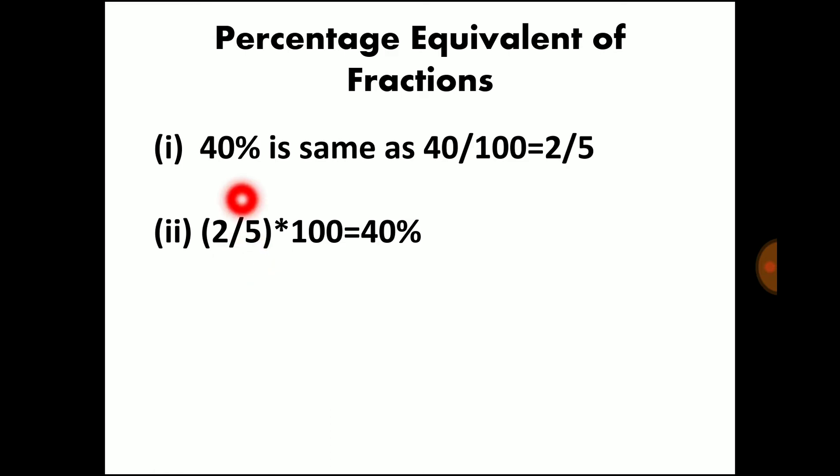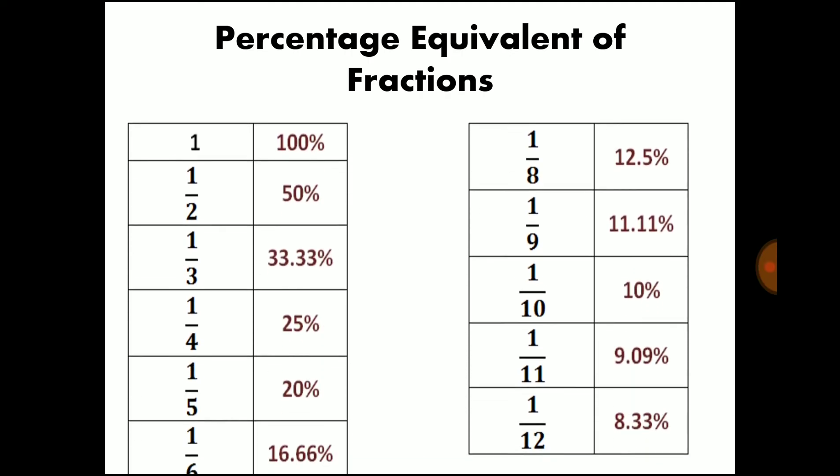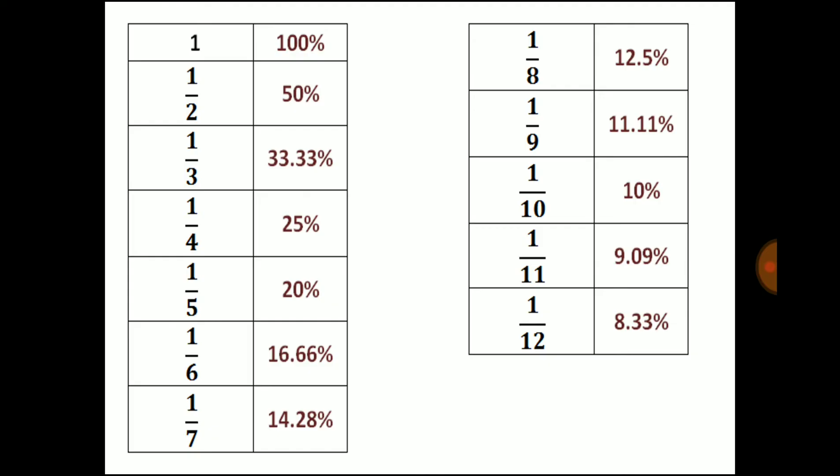Similarly, to convert the fraction into percentage, you have to multiply the fraction by 100. So 2 by 5 into 100 gives you 40%. You have to keep some fractions in your mind. So it will make the percentage operation simple. 100% is 1, 50% is 1 by 2, 33.33% is 1 by 3, 25% is 1 by 4, 20% is 1 by 5, 16.66% is 1 by 6, 14.28% is 1 by 7, 12.5% is 1 by 8, 11.11% is 1 by 9, 10% is 1 by 10, 9.09% is 1 by 11, 8.33% is 1 by 12. You have to keep these fraction and percentage values in your mind.